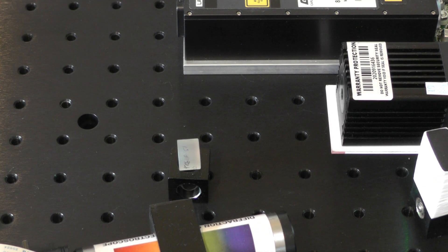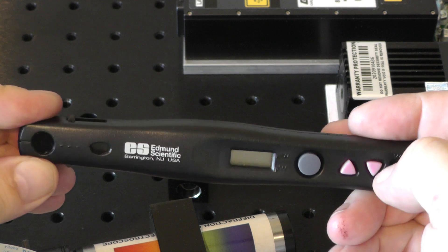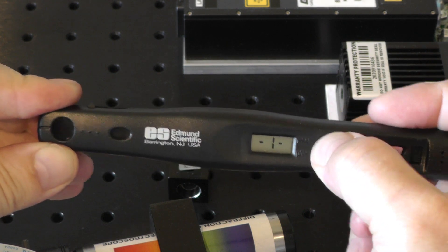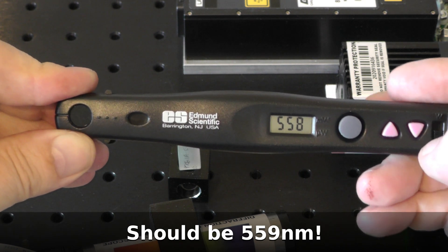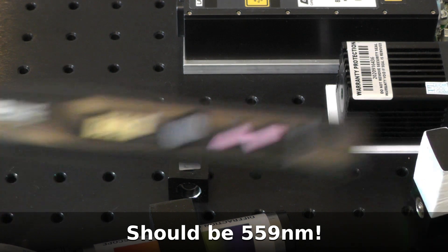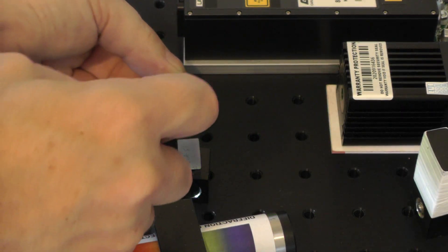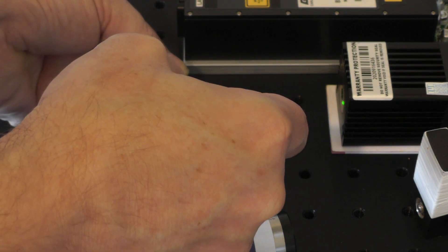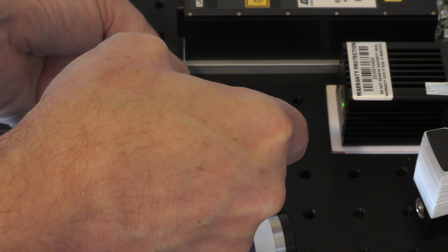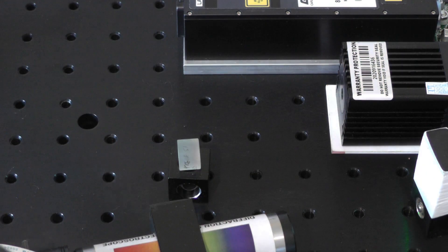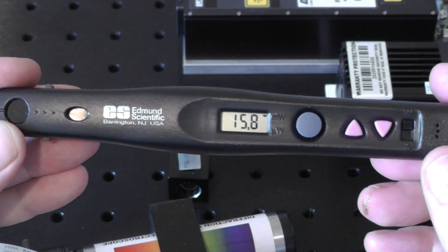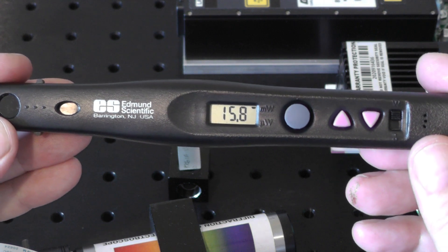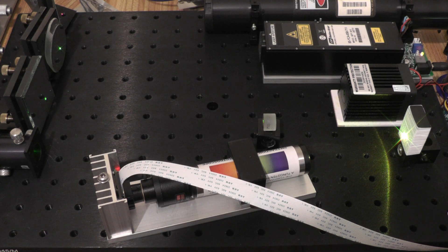Let's measure the output power of the laser. I've got my Coherent Lasercheck here and I've already set it up for 558 nanometers, which is what we're reading off the homemade spectrometer. Let's get in there and measure the output power. Reading 15.8 milliwatts, which is exactly where it should be. The advertised range was between 15 and 20 milliwatts, so perfect.